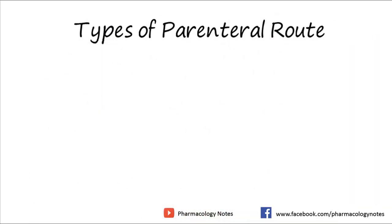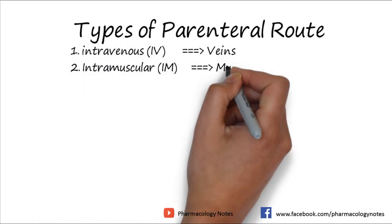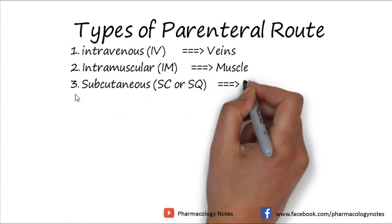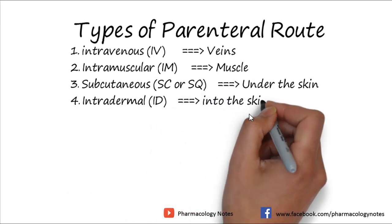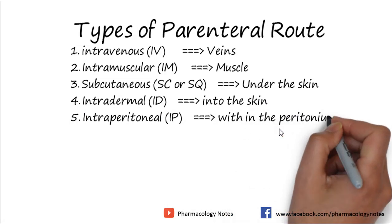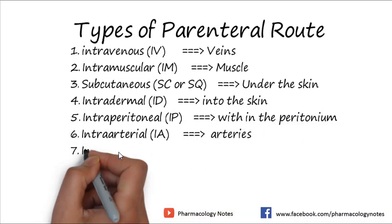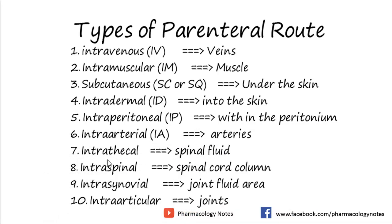There are several types of parenteral routes. Number one is intravenous (IV), the most important, meaning administration into the vein. Then intramuscular (IM), into the muscles. Subcutaneous, under the skin. Intradermal, into the skin. Intraperitoneal (IP), into the peritoneum. Intra-arterial, into the arteries. Intrathecal, involving spinal fluid. Intraspinal, administered into the spinal cord column. Intrasynovial, into the joint fluid area. And intraarticular, injection directly into the joints.